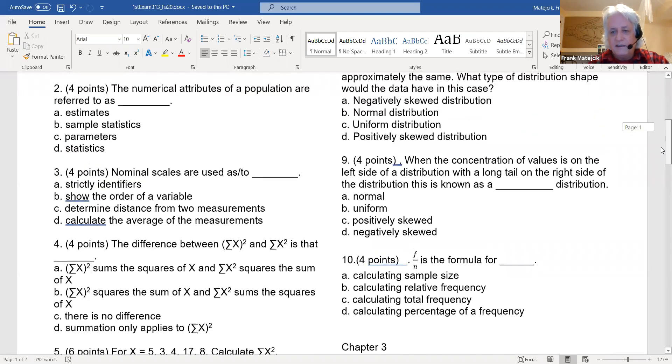For problem nine you can use positively skewed or negatively skewed, uniform or normal. Again looking up these definitions of skewed, uniform, and normal will get you the answer here. One f over n—this formula might not be in the textbook, but looking up these definitions if you could find them you might get an answer that gives you a good guess.